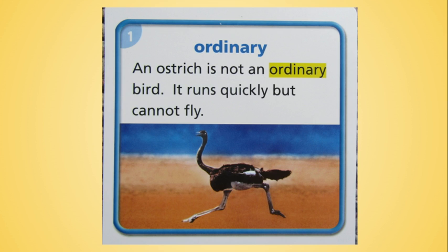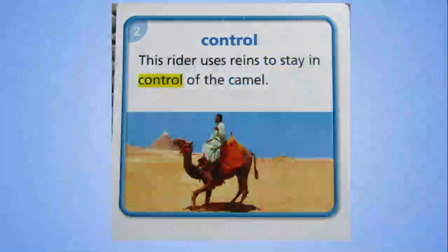Our next word is control. This rider uses reins to stay in control of the camel. Look at your picture clue. I can tell that the reins they're talking about are what that man is holding in his hand. We can think about reins as something that's used when you're riding a horse as well. They help you control or move the horse or animal the way you want to. Can you think of how you control a bicycle? What part of the bicycle helps you control it as you're riding? The handles.